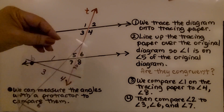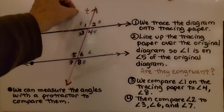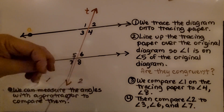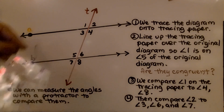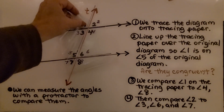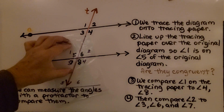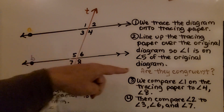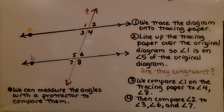We line up the tracing paper over the original diagram — it lines up perfectly. Then we line it up so that angle one is on angle five. I can slide this down so it's on top of angle five, and it lines up perfectly. So are they congruent? Yes — we lined up angle one with angle five and they were the same. They are congruent.